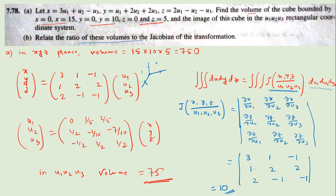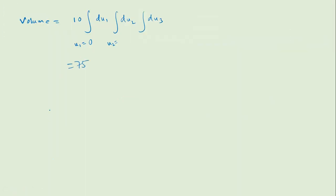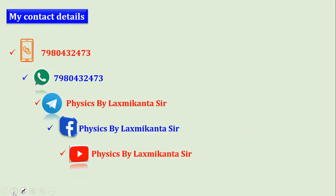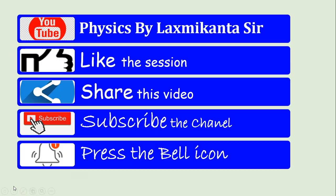The last part asks for the ratio of the volume to the Jacobian of the transformation. The Jacobian is 10 and the volume ratio of xyz space to u1 u2 u3 space is 750 to 75, which is consistent with the Jacobian. That's all for this video — if you have any problems please comment below. Take care and we'll meet in the next video. Thank you.